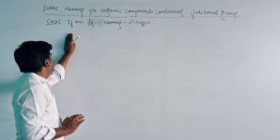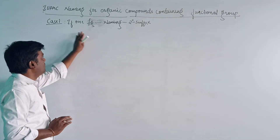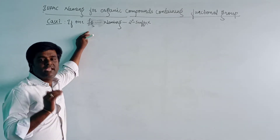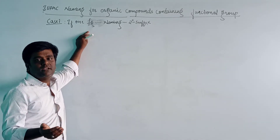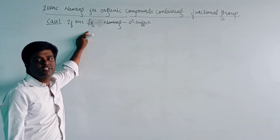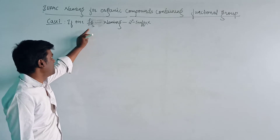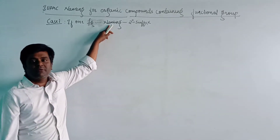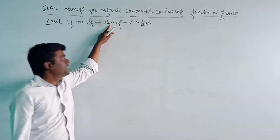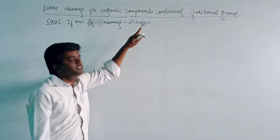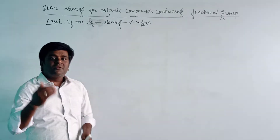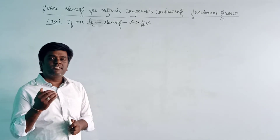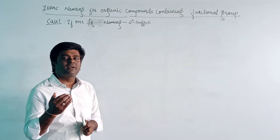In the first case, we have seen that if one functional group is present, the numbering should be done in such a way that the functional group should get the lowest minimum number. During naming according to the IUPAC system, the terminal E of the primary suffix is replaced by the secondary suffix.